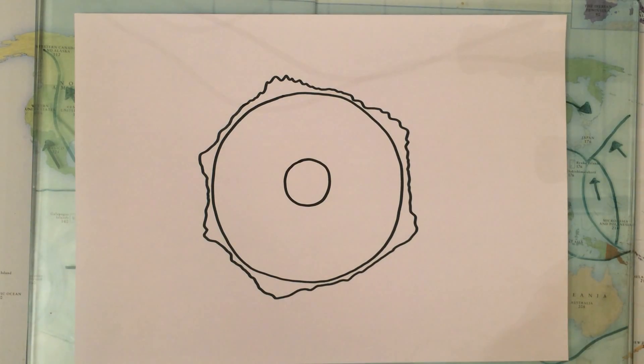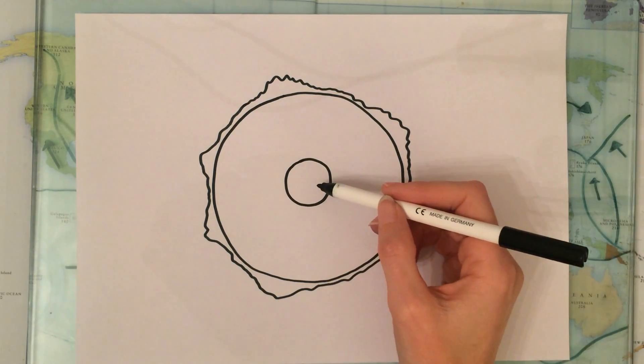The earth is like a boiled egg and if you imagine taking a slice through the boiled egg, we would have in the middle the yolk.